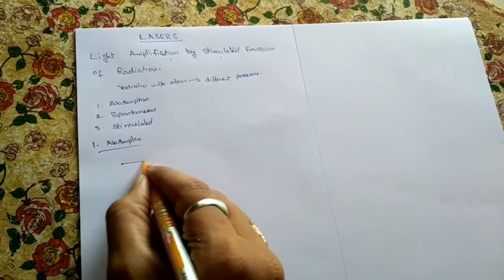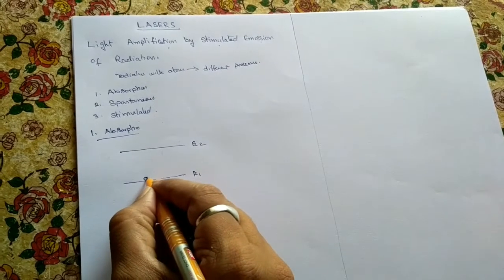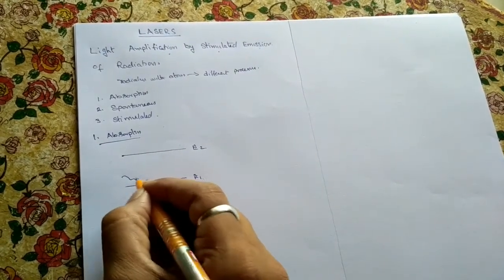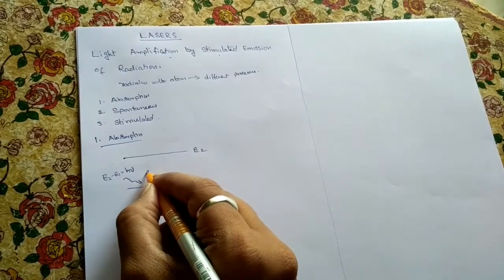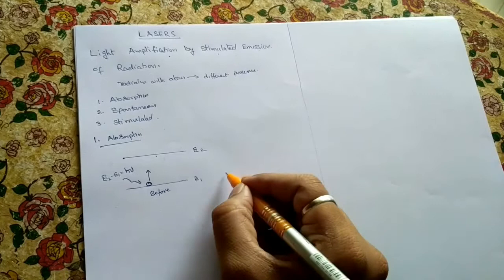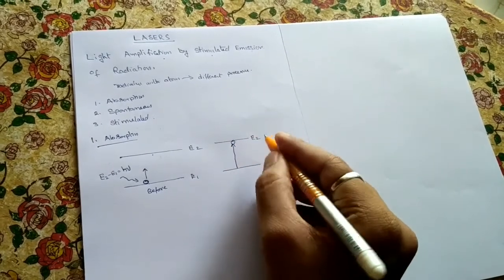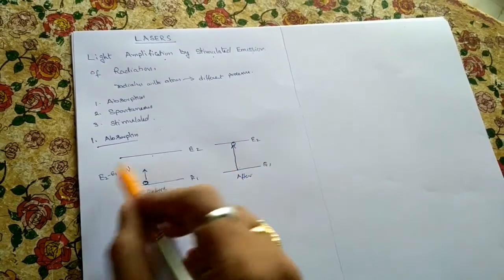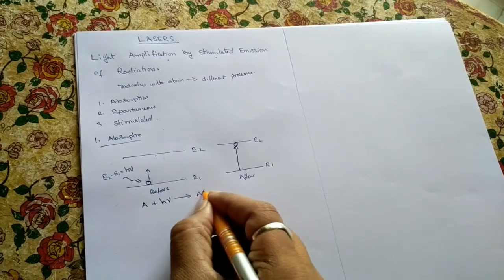For absorption, assume two energy levels: E1 and E2. Atoms at the ground state, by absorbing energy equal to E2 minus E1, which equals h-nu, transition to the excited state. This process is called absorption.